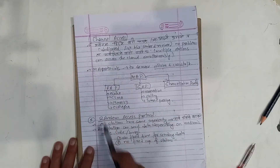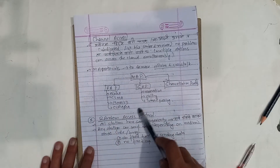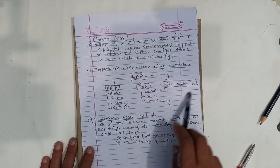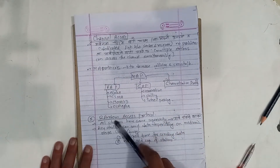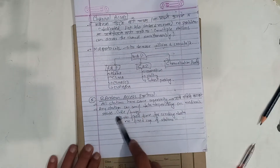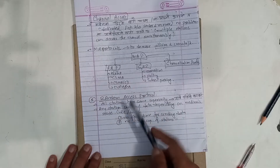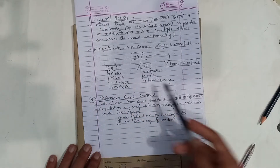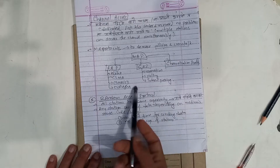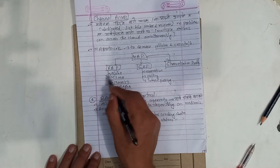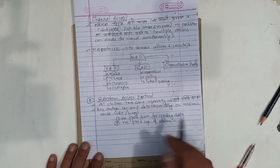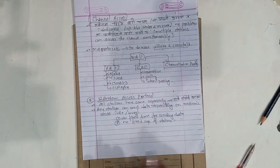What do you mean by the media access protocol? There is the random access protocol, the control access protocol, and the channelization protocol. Let's look at the random access protocol — what do you mean by the random access protocol?